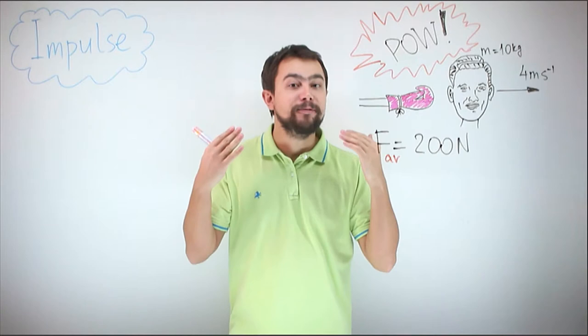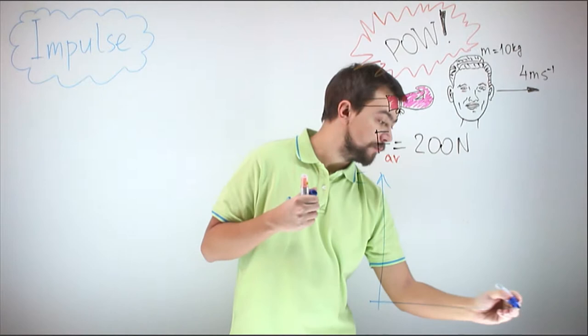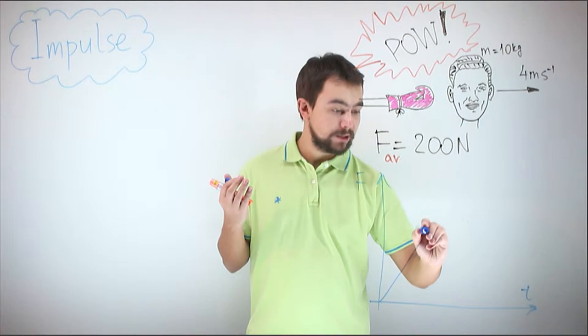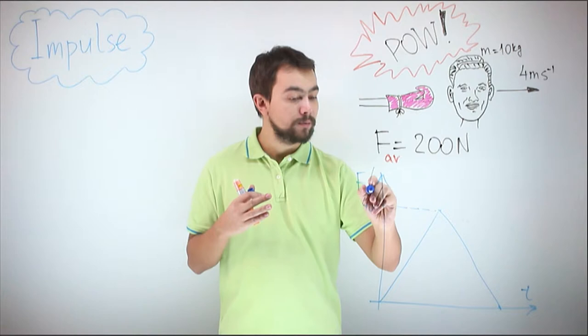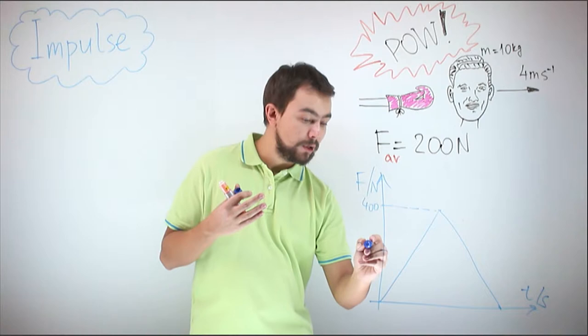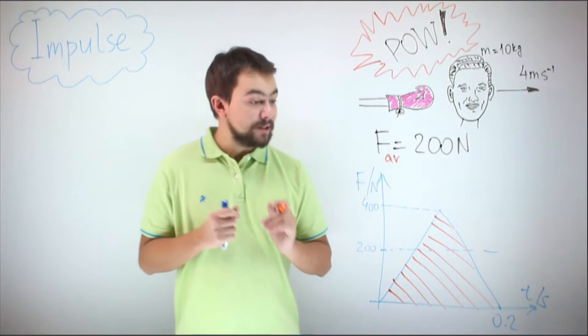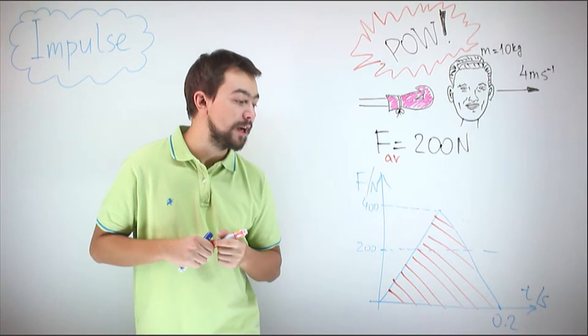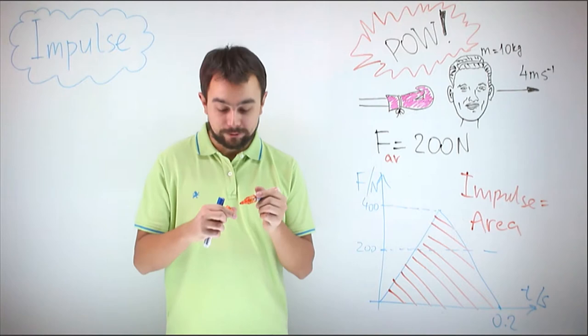Because when you punch somebody in the face, you cannot deliver the same force — force changes in time. So if we draw the graph of force versus time, it would look something like this: first force increases, and then force decreases. In case of a triangle, the maximum force would be 400 Newtons, so the average force is 200. This graph has a very important feature: since impulse is force multiplied by time, the area under this graph is equal to the delivered impulse.